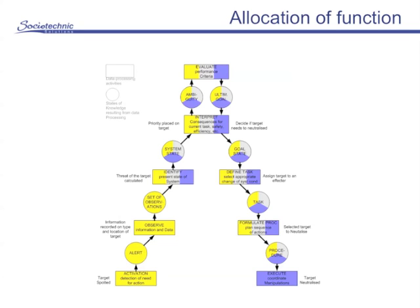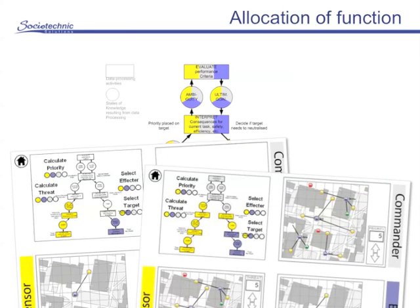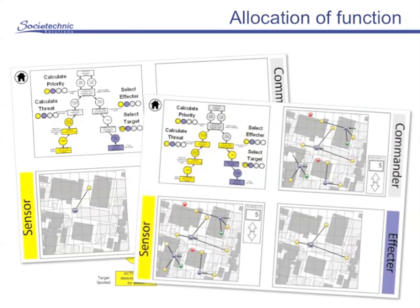Another benefit of Cognitive Work Analysis is addressing allocation of function. We looked at developing dynamic allocation of function interfaces that showed how a system could be rapidly reconfigured in real time and how the interfaces could be changed to show how these changes were affecting the system.